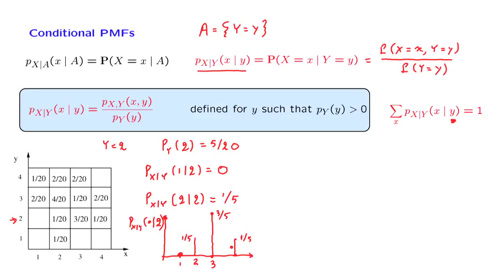We could have found this conditional PMF even faster without doing any divisions, by following an intuitive argument. We live in this conditional universe — we have conditioned on Y being equal to 2. The conditional probabilities will have the same proportions as the original probabilities, except that they need to be scaled so that they add to 1. So they should be in the proportions of 0, 1, 3, 1, and for these to add to 1 we need to put everywhere a denominator of 5. Pictorially, the conditional PMF has the same form as the corresponding slice of the joint PMF, except that the entries of that slice are renormalized so that the entries add to 1.